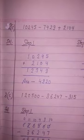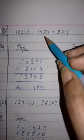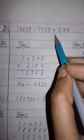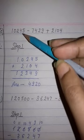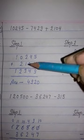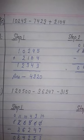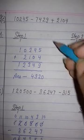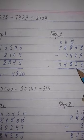See the next question: 10,245 minus 7,429 plus 2,104. Here subtraction is given first and then addition. No difference — it doesn't matter. You have to do the addition first. So first of all, 10,245 plus 2,104. Step 1 will be addition. Even if subtraction is given first, you will not do that first — you will do addition. After the addition, you will get 12,349. Now subtract 7,429 from this, and you will get 4,920. This is the answer of this question.